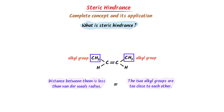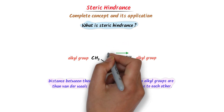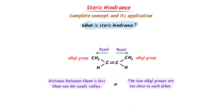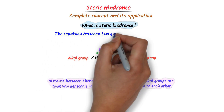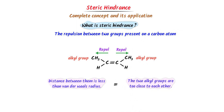These two alkyl groups are too close to each other. Their electronic density interacts with each other. As a result of this interaction, they repel each other in opposite directions. This repulsion within a molecule is called steric hindrance. The steric hindrance means that these two non-bonding alkyl groups repel each other in this organic compound. Therefore, we define steric hindrance as the repulsion between two groups present on a carbon atom if the distance between the two is less than the van der Waals radius.